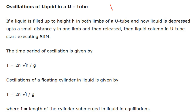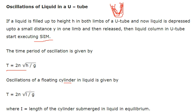Oscillation of liquid in a U-tube: if a liquid is filled to height h in both limbs of a U-tube and depressed by a small distance y in one limb then released, the liquid column executes simple harmonic motion. The time period is T = 2π√(h/g). The oscillation of a floating cylinder in liquid is also given by T = 2π√(h/g), where h is the length of the cylinder submerged in liquid at equilibrium.